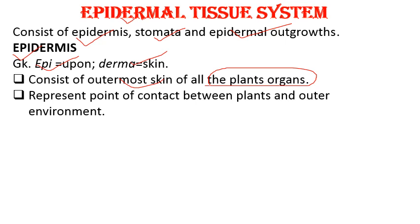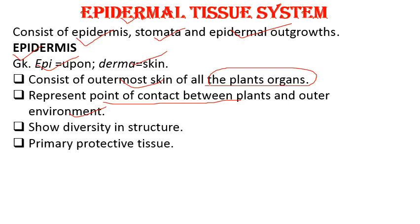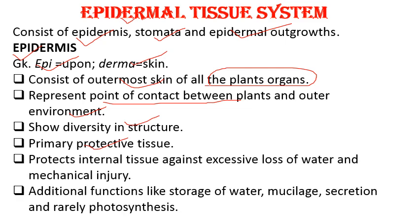The epidermis is a junction between the outer environment and the inner environment of plants — it is the point of contact between the plant and its outer environment. It is not uniform in all plants and shows variety in structure. It forms the primary protective tissue, acting as the first line of defense. It protects internal tissue against excessive loss of water and mechanical injury. It also performs functions like storage of water or mucilage, secretion of chemical substances, and rarely helps in photosynthesis.